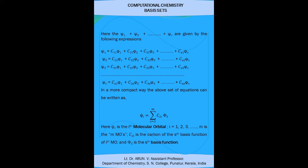These expressions for psi_1, psi_2, psi_3, and so on up to psi_n can be written in a more compact way: psi_i = sigma (s=1 to m) c_si · phi_s. Here psi_i is the i-th molecular orbital, where i can vary from 1, 2, 3, up to m — so there are m molecular orbitals. c_si is the coefficient of the s-th basis function of the i-th molecular orbital, and phi_s is the s-th basis function.